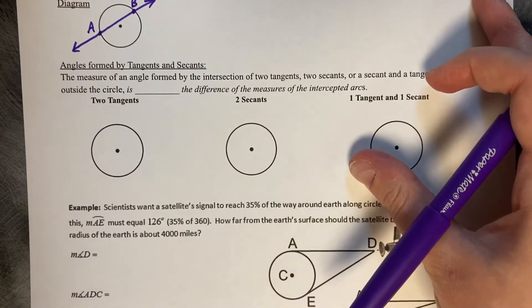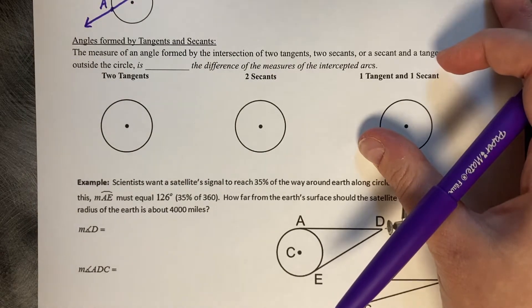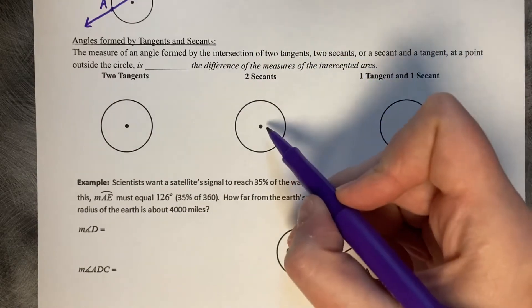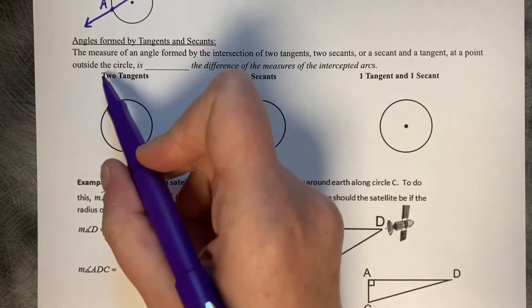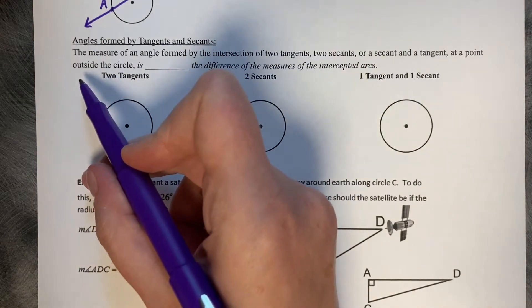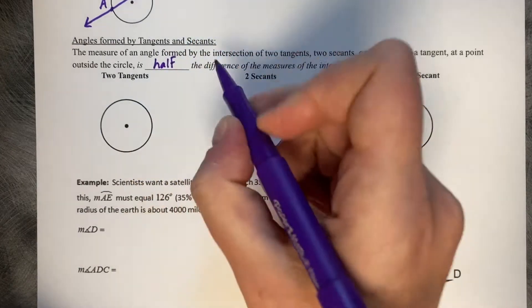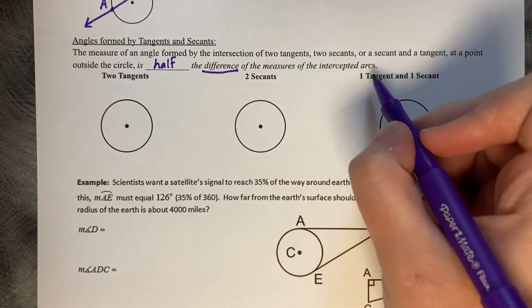Now, we're going to talk about the angles that are formed by tangents and secants. The measure of an angle formed by the intersection of two tangents, two secants, or a secant and a tangent, at a point outside the circle, so we're talking an exterior intersection, is half the difference, so the subtraction, of the intercepted arc.